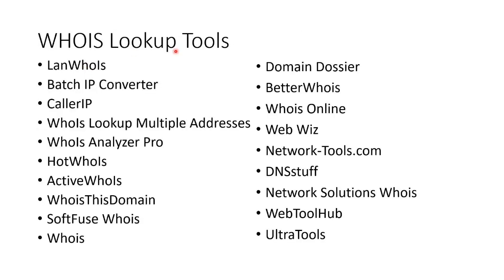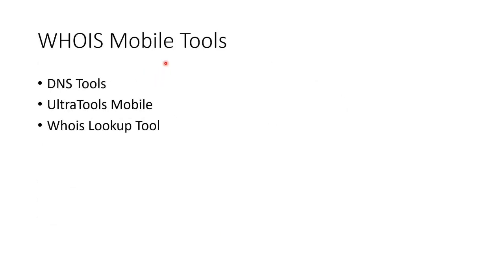Now, there are a huge number of Whois lookup tools. There are plenty of online Whois lookup tools — DNS Stuff is not a bad one, Network Solutions is not a bad one. The ones that are actually really good are the download tools that you run in Kali Linux. There are also Whois tools for mobile devices — DNS tools, Ultra Tools, Whois Lookup Tool — so you can do all this on a mobile phone, not just a laptop or desktop. We'll be taking a look at Whois searching when we get to the lab.